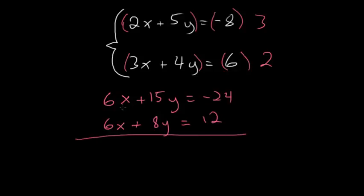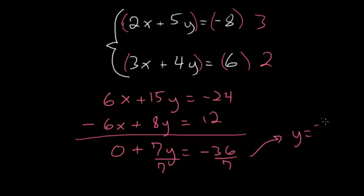Now since the x coefficients are the same, we can subtract: 6x minus 6x is 0, plus 15y minus 8y would be 7y, and minus 24 minus 12 is minus 36. We divide each side by 7 to solve for y, so we know that y equals minus 36 over 7.